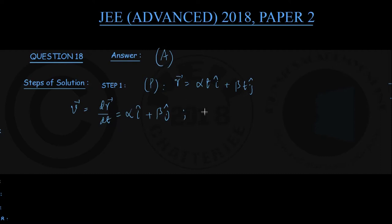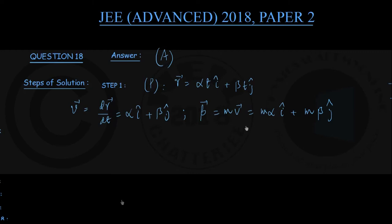Therefore, the linear momentum of the particle, symbol P, is given by mass m times velocity vector V, giving m·alpha·î plus m·beta·ĵ. Since mass m is a constant, alpha and beta are constants, and î and ĵ are unit vectors (also constants), the linear momentum of the particle is constant or conserved in time. So P remains constant for motion P.